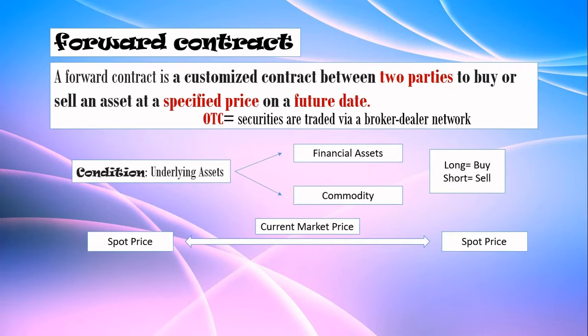You might ask why there are two spot prices — one on the left and one on the right side. The left-side spot price is denoted as lowercase 's' with subscript 't' (s_t), and the right-side spot price is denoted as uppercase 'S' with subscript 'T' (S_T). Starting with the left one, s_t: when you are making a forward contract right now, the underlying asset must have a current market price, and that is your s_t.